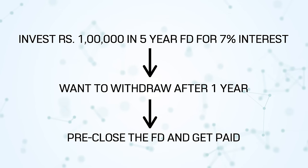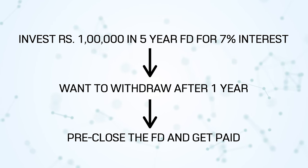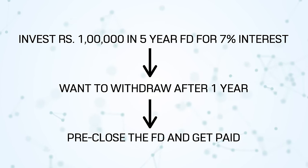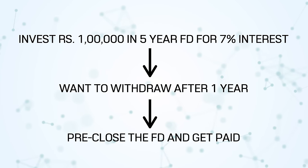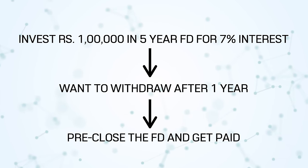To explain some basic facts, I'll give a small analogy. Let us say you put 1 lakh rupees in a bank fixed deposit at 7% for 5 years. After 1 year, if you have an emergency, you can go to the bank and ask to pre-close the FD. They will charge some penal interest, but they will close it and pay you. That option exists with FD.